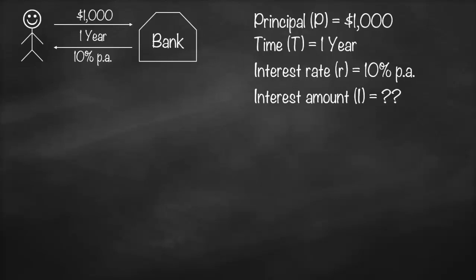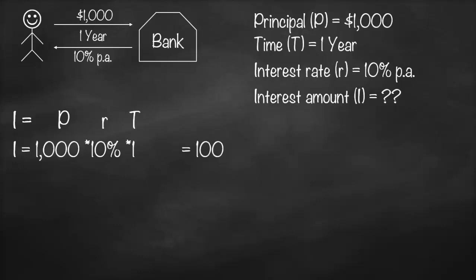It's a hundred dollars. How did you calculate it? We have a very simple formula: the interest amount is equal to principle times interest rate times time, or I = P × r × t. Substituting, the interest amount is equal to a principle of a thousand dollars multiplied by an interest rate of 10 percent multiplied by a time of one year, which gives us a hundred dollars.